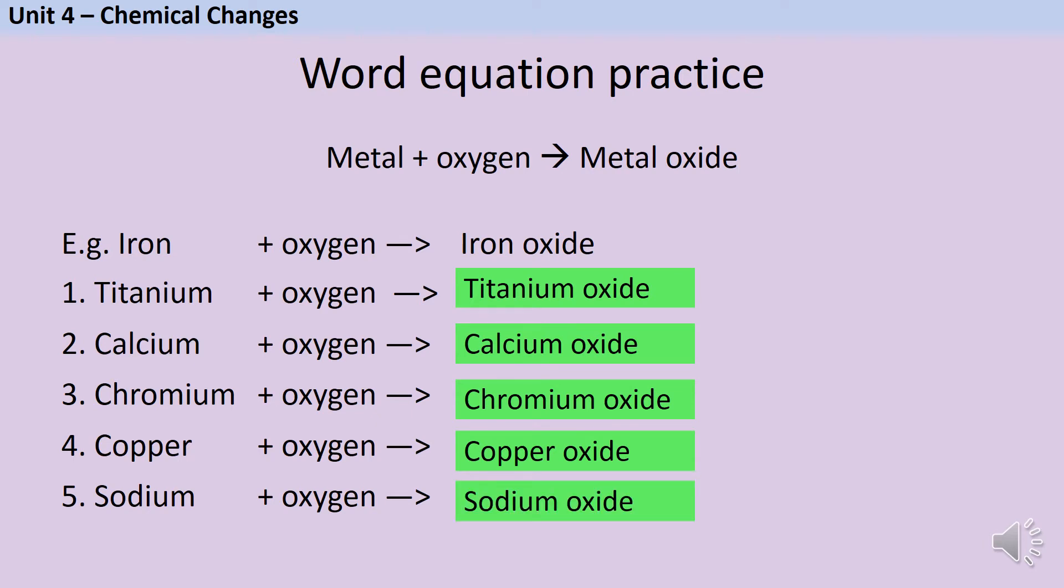As you can see, there's a pattern to this. And once you know what the pattern is, they can give you the name of literally any metal and you would know what the product being made was. If you've downloaded the worksheet, there are now five more examples for you to have a go at.